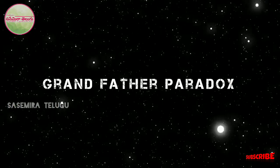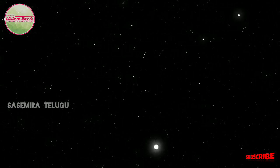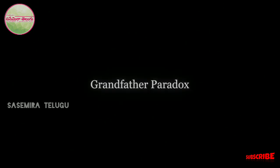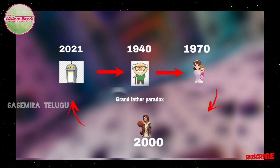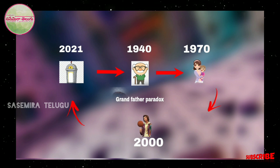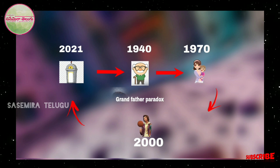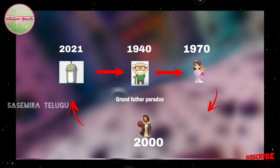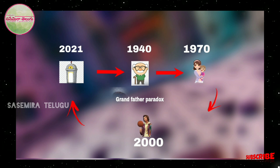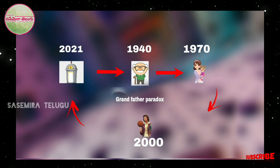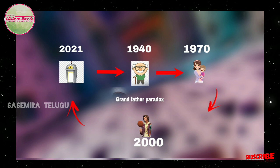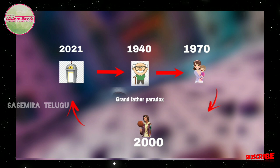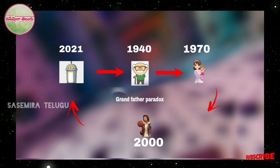The grandfather paradox is a good example showing that time travel is not possible. Briefly: if in 2021 you traveled back in time and killed your grandfather in 1940, then your mother would not be born in 1970 because your grandfather is dead. And you would not be born in 2000 because your mother was not born. But then how did you travel in time and remain alive when you were never born? This question has no answer — it is a paradox. Through this paradox, it is clear that time travel is not possible in our 3D world.